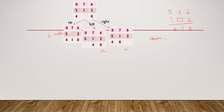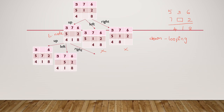Moving the down tile into the empty slot results in a looping state, so we will not use that operator. The remaining possible moves are: moving the left tile, the right tile, or the up tile. If I move the up tile, this is the resulting state. If I move the left tile, this is the resulting state. If I move the right tile, this is the resulting state.